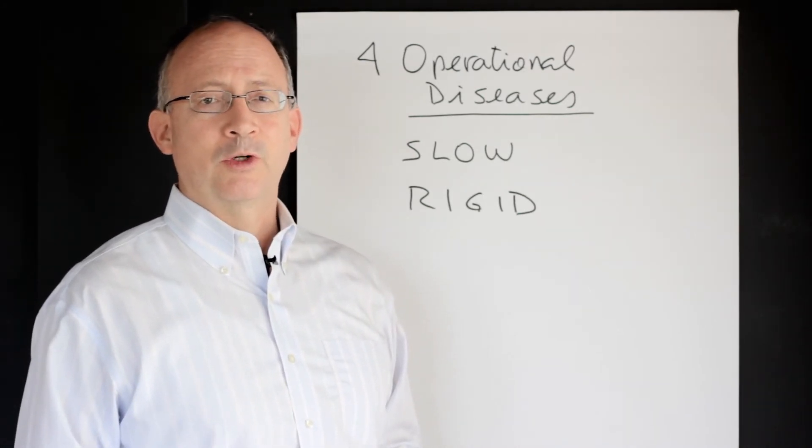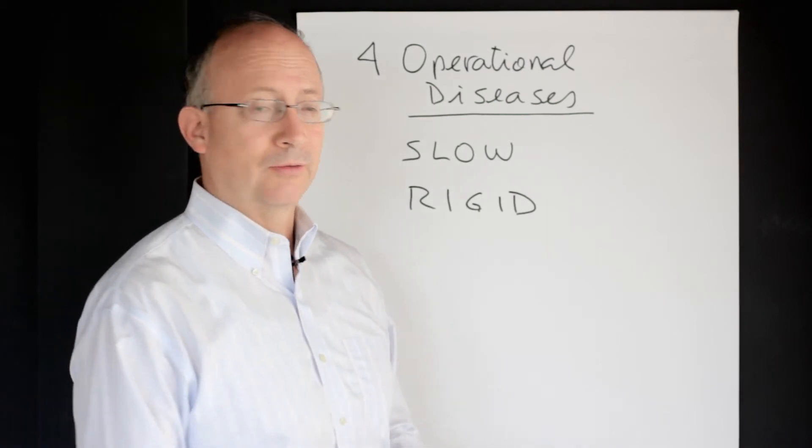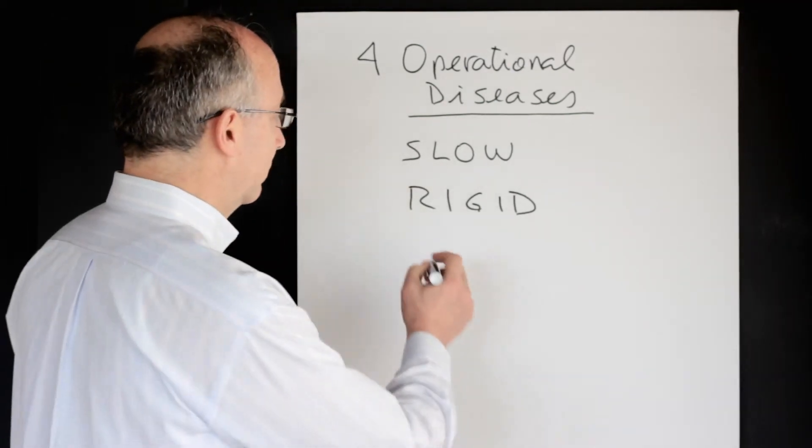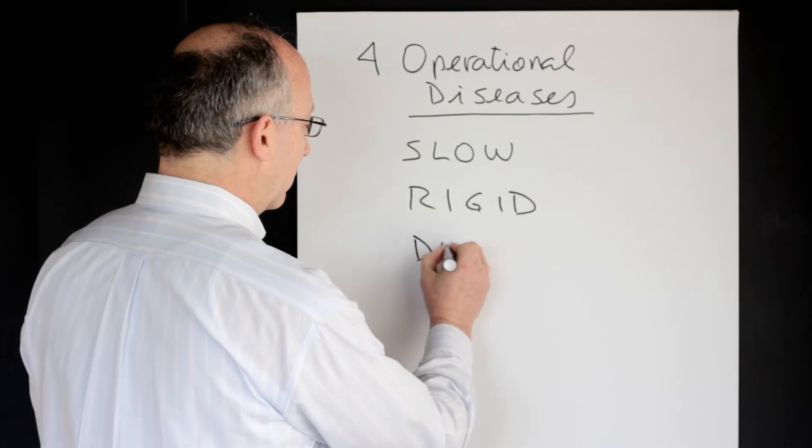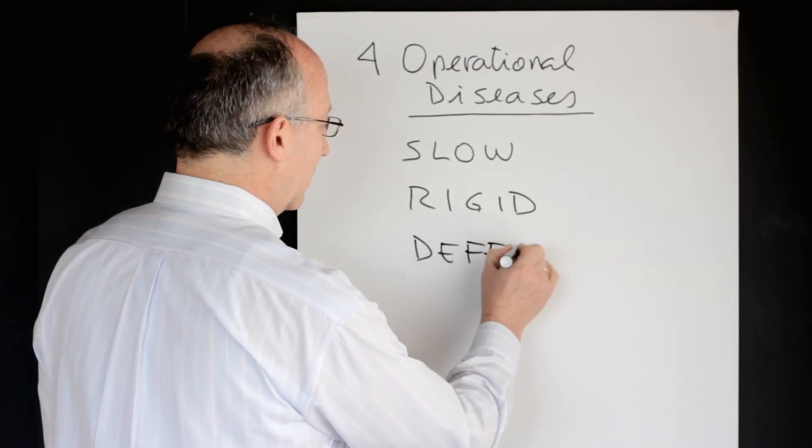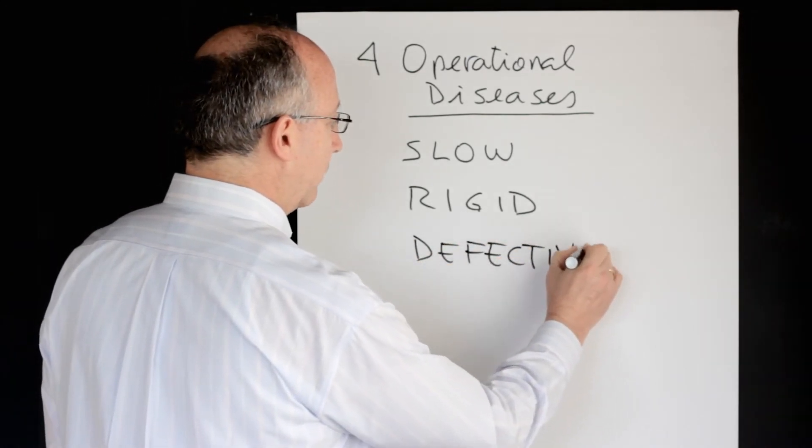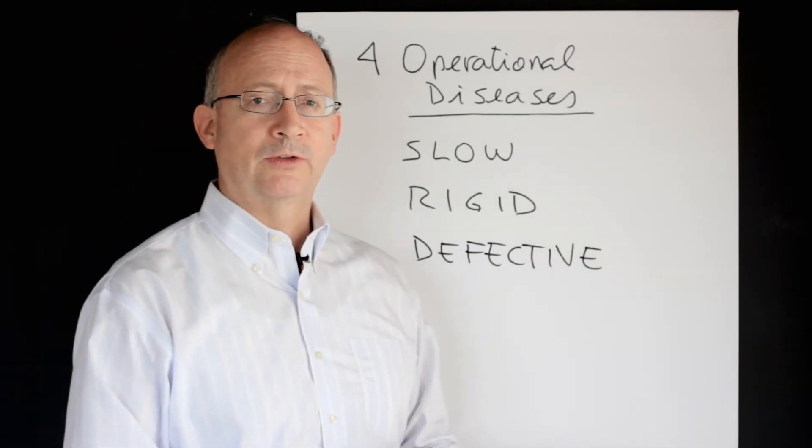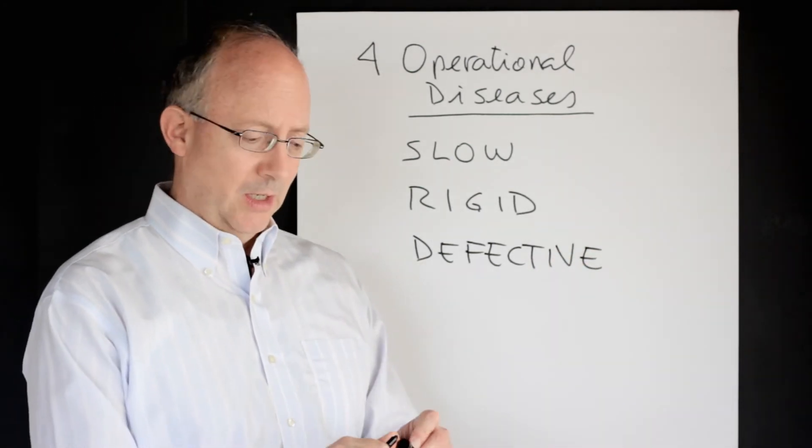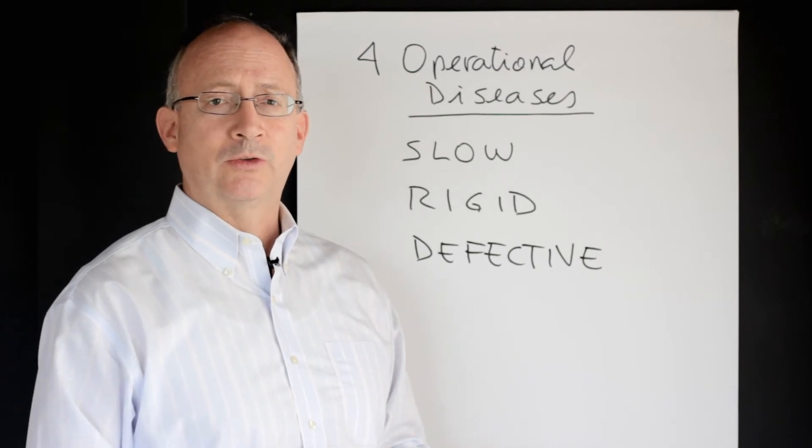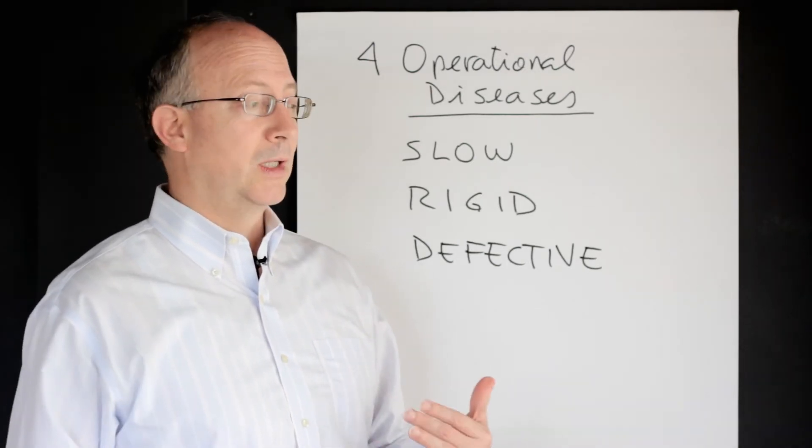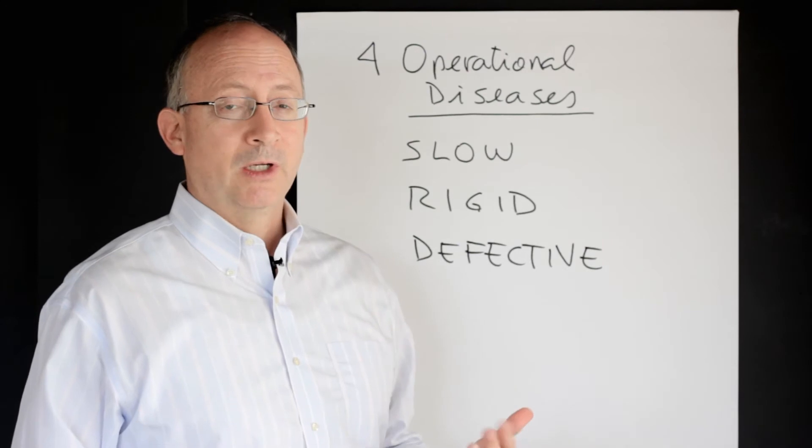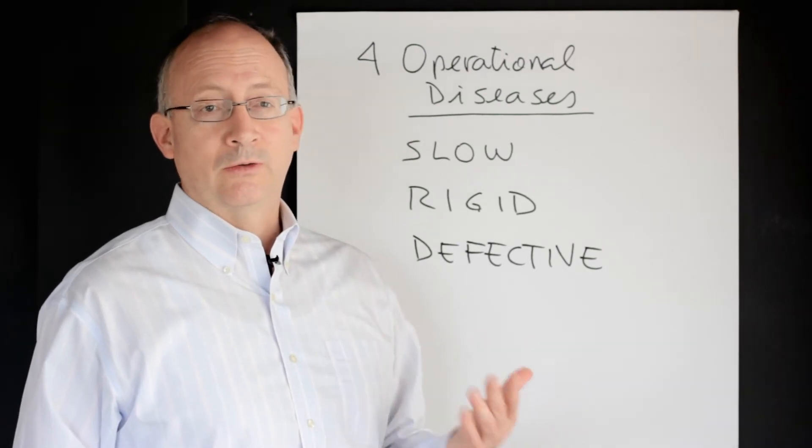The third type of operational disease is what we call defective or error prone. A defective operation is exactly the opposite of what anybody who would have designed a process set out to do in the first place. Nobody really wants to set up operations in order to do things wrongly or to get them done right the second time. You want to get them done right the first time.